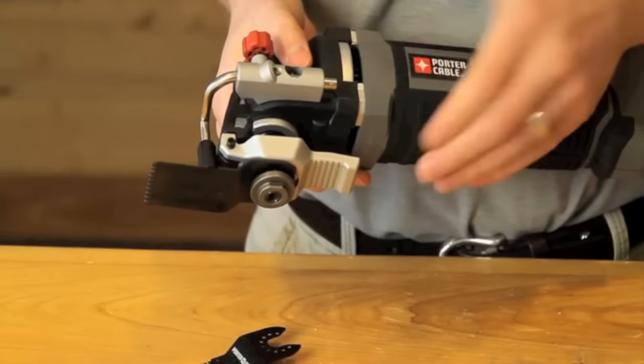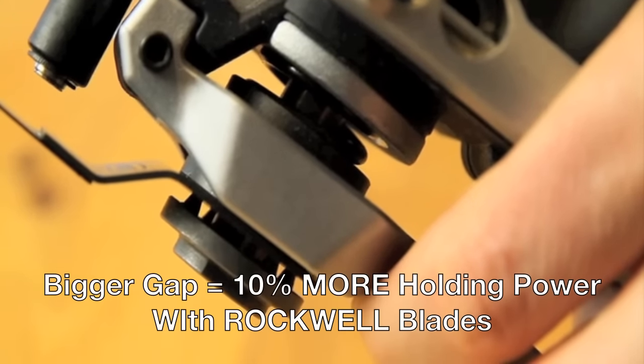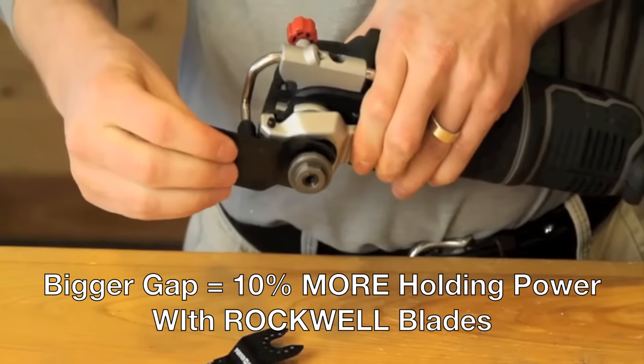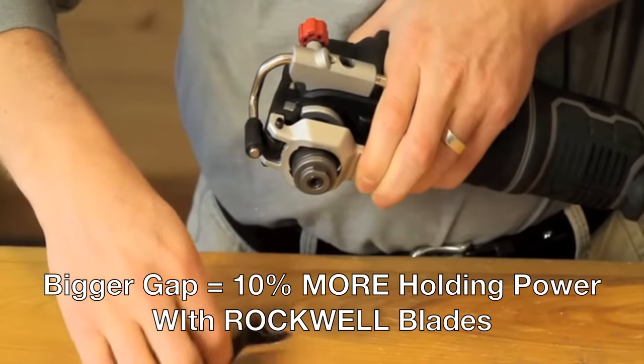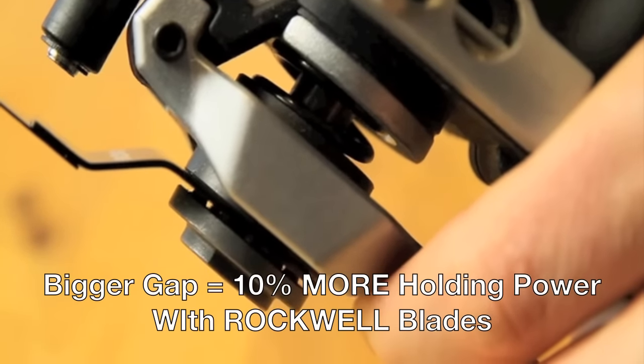Now one thing to make note of, no concern, is that there is a gap between the blade and the flange. But the Porter Cable accessory also has a similar gap, and that's just due to the design of the cone-shaped pins.